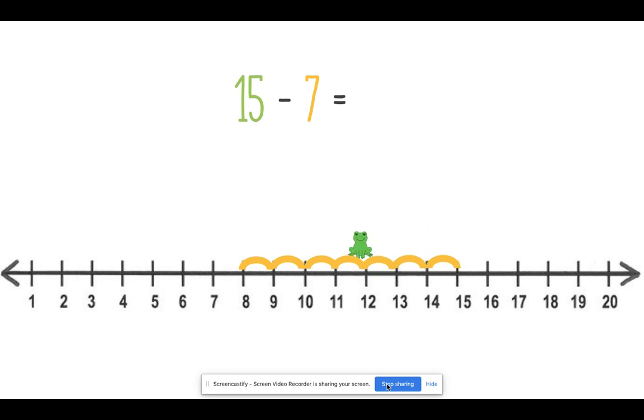Let's get him to jump. 1, 2, 3, 4, 5, 6, 7. Where did he stop? Good. So when froggy jumped back 7 spaces, 15 minus 7 equals 8. Excellent.